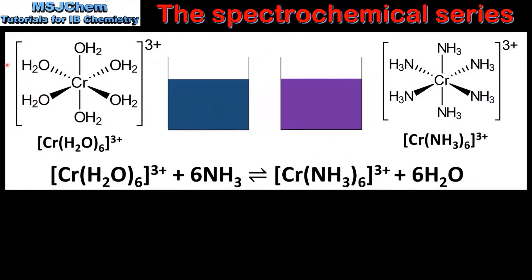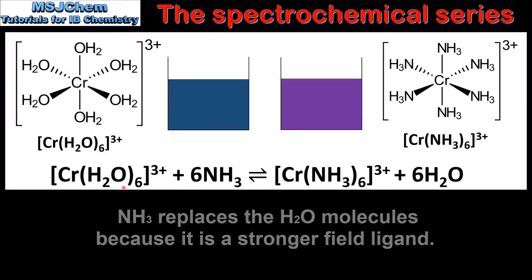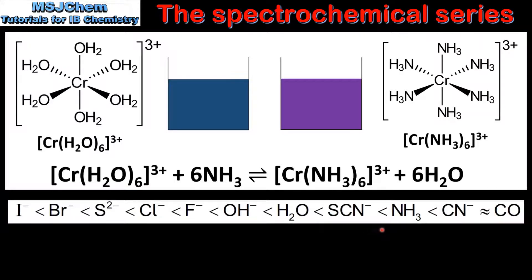In the next example we'll look at another two solutions of complex ions. The complex ion on the left has six water molecules as ligands, and the complex ion on the right has six ammonia molecules as ligands. The complex ion on the right was produced by adding excess ammonia to the complex ion on the left. From the equation we can see that the six water molecules have been replaced by six ammonia molecules. Using the spectrochemical series, ammonia is a stronger field ligand than water, so the solution of complex ions on the right will absorb light of a shorter wavelength.